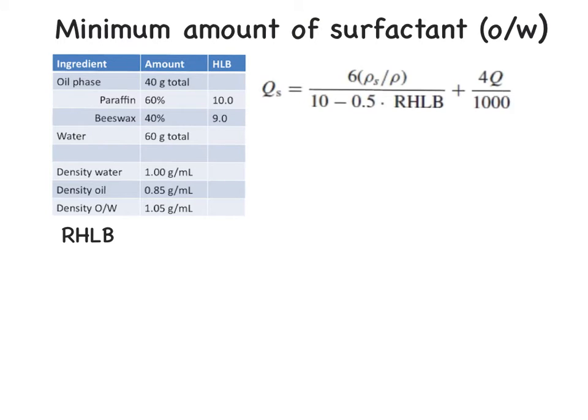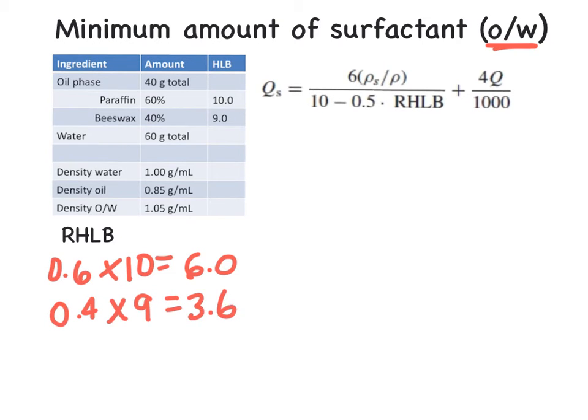Let's look at an example where we're forming an oil in water emulsion with this recipe. The first thing we'll do is calculate the RHLB, since that's the only variable that we're missing from our equation. With our RHLB, we have the 60% or 0.6 times the HLB of 10 for the paraffin. So that's 6.0. Beeswax fraction is 0.4 times the HLB of 9, gives us a value of 3.6. So we have an RHLB equal to 9.6.